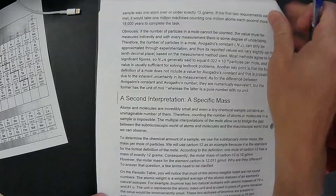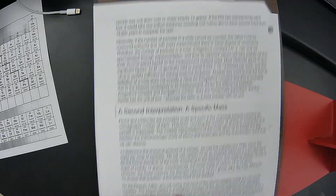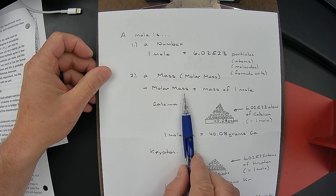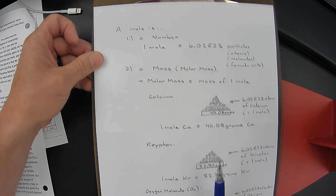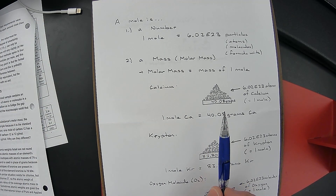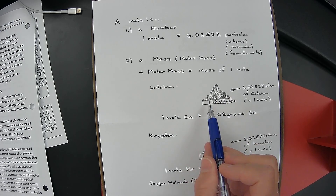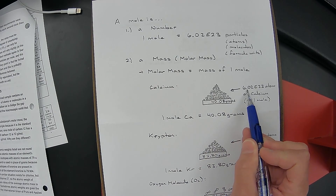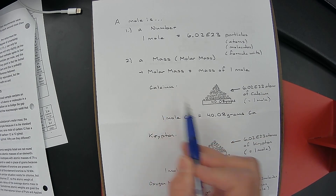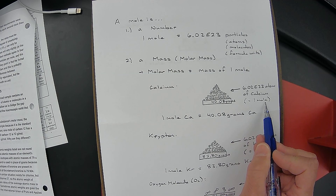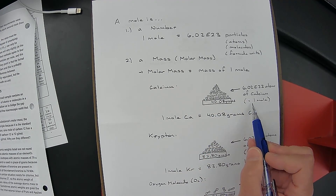The second interpretation is that a mole is also equivalent to a mass — specifically what we call the molar mass. We can picture placing calcium atoms on a balance one by one. Obviously you can't actually do this, but it gives a good indication of the definition. We keep adding calcium atoms until we reach 602 billion trillion — 6.02 × 10²³ atoms of calcium. We identify that as one mole, just like two atoms would be one pair, and twelve atoms would be one dozen.